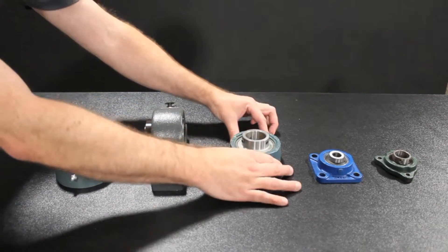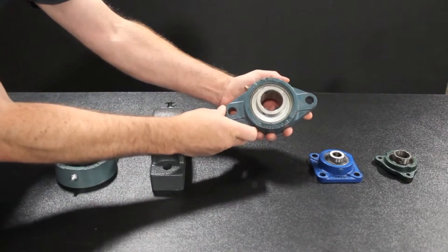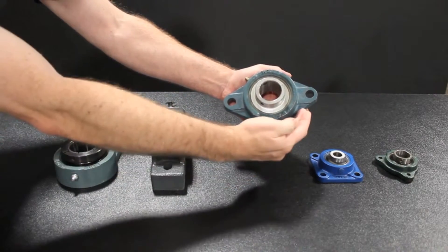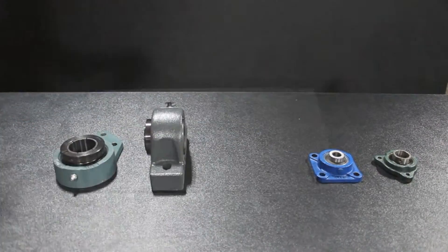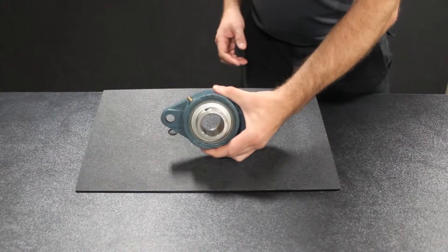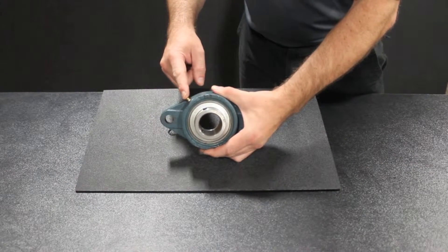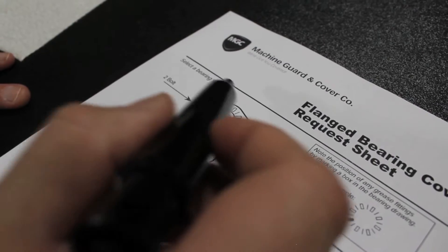First determine the bolt pattern of your part. In this example, we are using a two bolt bearing. Take note of any grease fittings on your part. Make note of their position on the appropriate illustration.